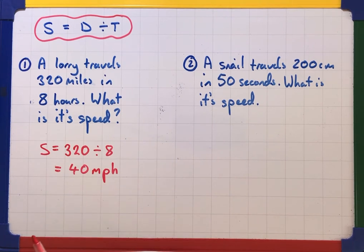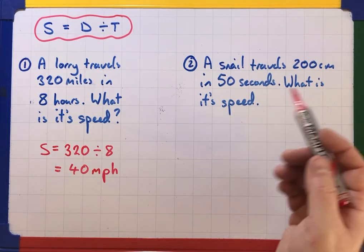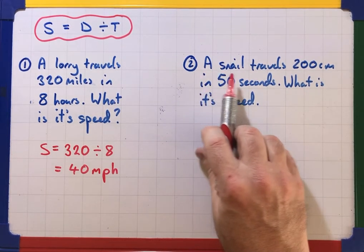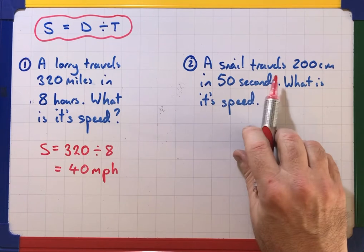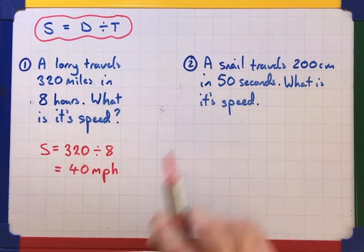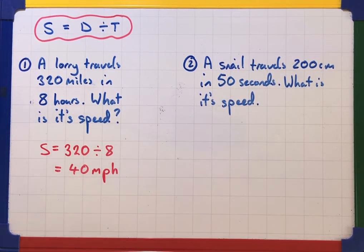We don't always have miles or kilometers and hours so sometimes it might be in different units. For example look at this second one. A snail travels 200 centimeters in 50 seconds. What is its speed?